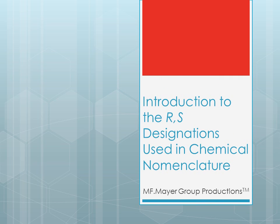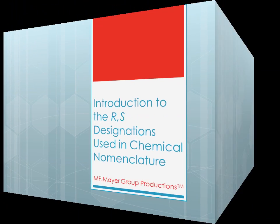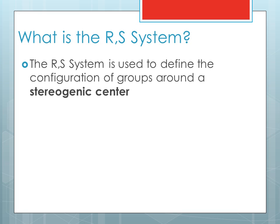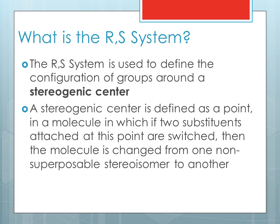Here's an introduction to the RS designations used in chemical nomenclature. What is the RS system? The RS system is used to define the configuration of groups around a stereogenic center. A stereogenic center is defined as a point in a molecule in which if two substituents attached at this point are switched, then the molecule is changed from one non-superposable stereoisomer to another.